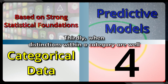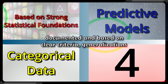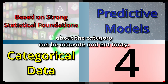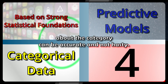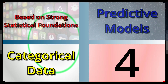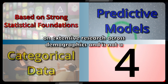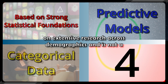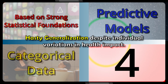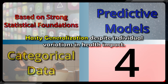Thirdly, when distinctions within a category are well documented and based on clear criteria, generalizations about the category can be accurate and not hasty. For example, general advice that smoking is harmful to health is based on extensive research across demographics and is not a hasty generalization, despite individual variations in health impact.